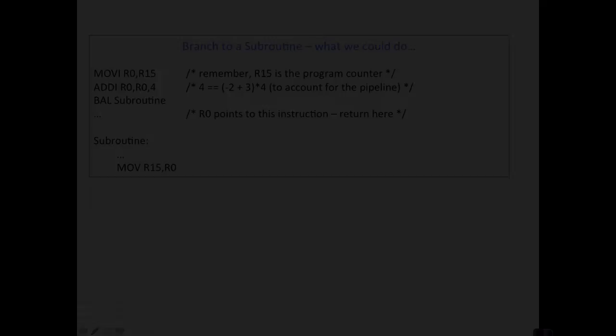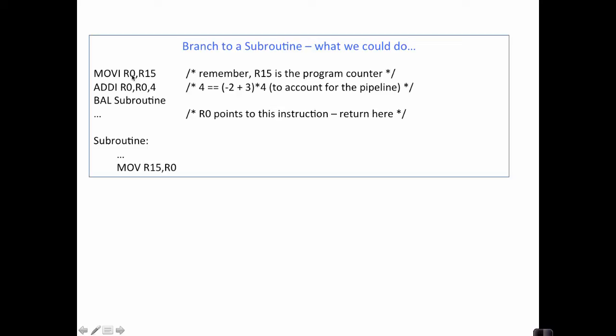So somehow we need to figure out when we're in the subroutine where to go back to. What we might want to do is take the program counter and store it in register 0, and then use that to calculate where we want to return to. The way we would do that calculation is we would add 4 to register 0 and store that back in register 0, and then we could branch to the subroutine here, and when we're all done with the subroutine, we could take what's in R0, move it into the program counter, and that would cause us to start back on this instruction here. One question you might have is, why are we adding 4 to the program counter that we captured up here that we're now using in register 0?